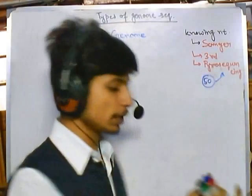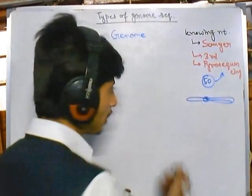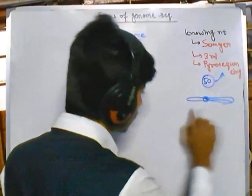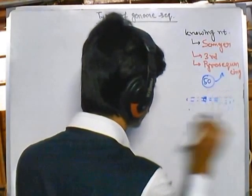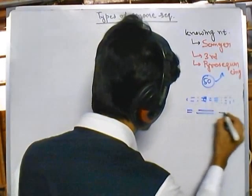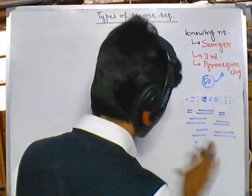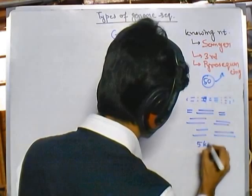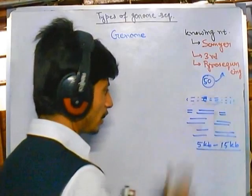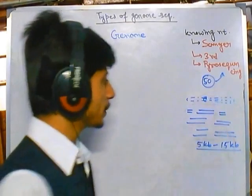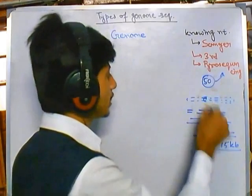Let's say this is our chromosome — we chop it up into smaller fragments and get small fragments of DNA. Once we get these small fragments — ranging from, say, 5 kilobase pairs to 15 kilobase pairs in length — these base pair lengths are generated after fragmentation. Then we can sequence all of them, or we can refragment them into even smaller fragments.